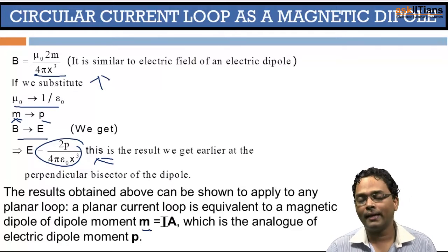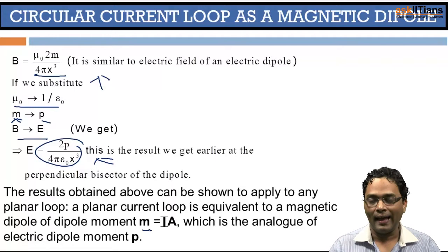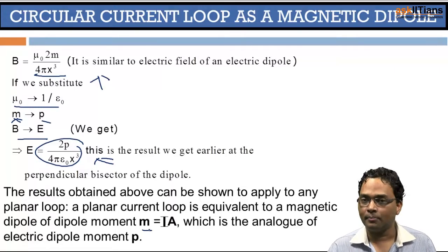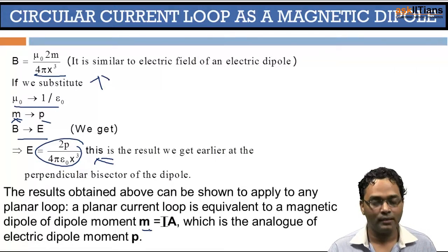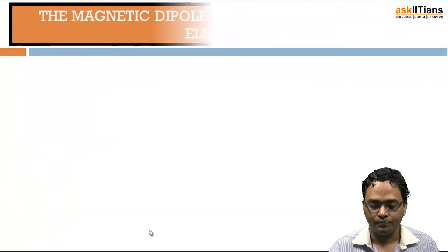This is an analog of the electric dipole moment. In the electric case you had pole strength and the distance between the poles; here it is the current and the area of the loop — not the length, but the loop area.